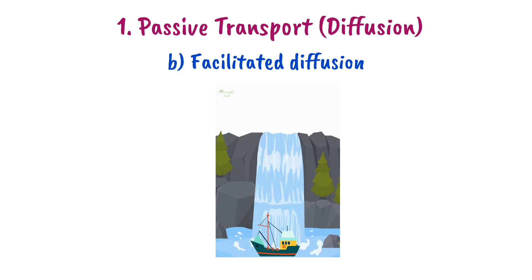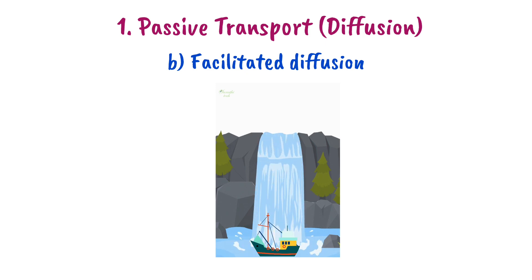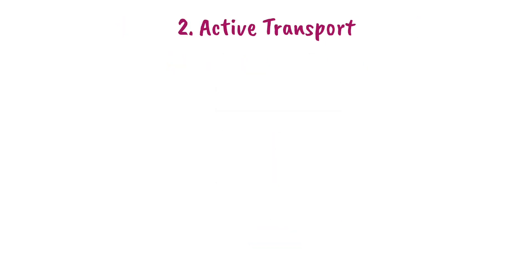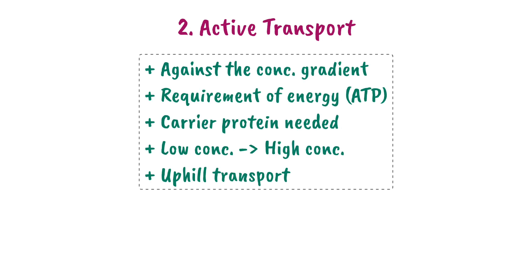That's why facilitated diffusion is still passive transport. Now, the second main heading is active transport. Active transport is the transport of substances against the concentration gradient with the requirement of energy and a carrier protein. The energy is supplied by the breakdown of ATP. Active transport is also known as uphill transport or uphill movement.